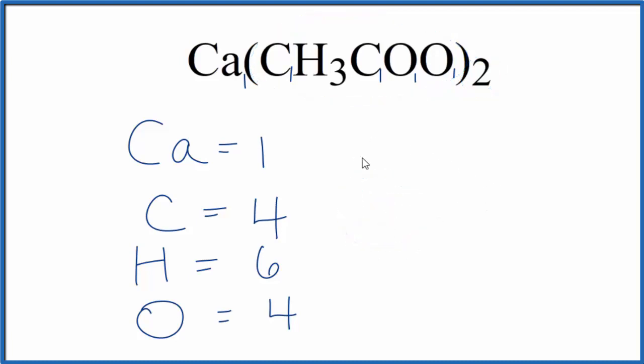Sometimes you'll be asked to figure out the number of atoms in 1 mole of calcium acetate. So for calcium, we would take 1, that's how many calcium atoms we have, multiply it by Avogadro's number, and that would give us the number of calcium atoms in 1 mole of calcium acetate.